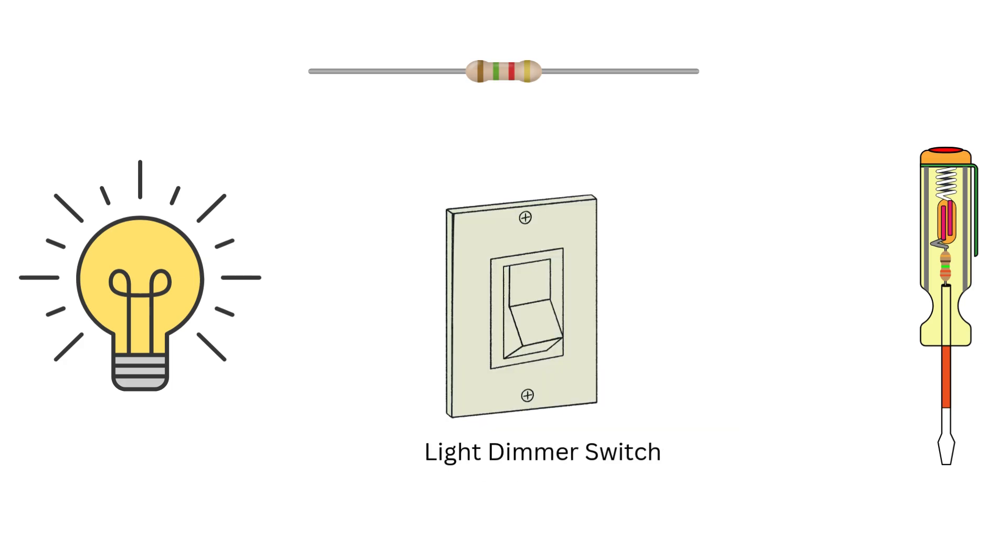Let's make it even more relatable. Think of a light dimmer switch. When you slowly adjust the dimmer, the inductor helps prevent the light from flickering. It makes the change smooth and gradual.